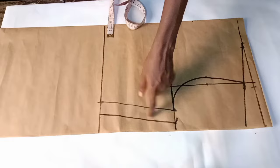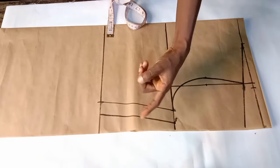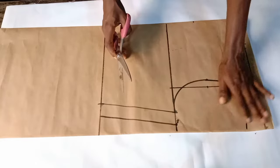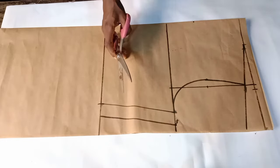So this is my side seam allowance. Now I'm going to cut it out before I fix the overlap area.